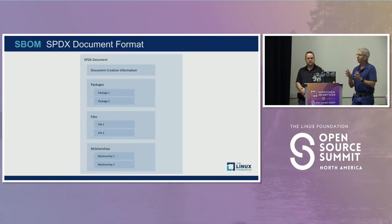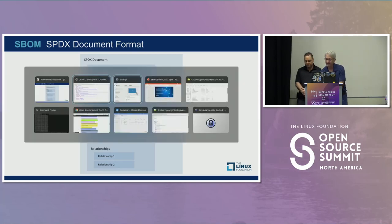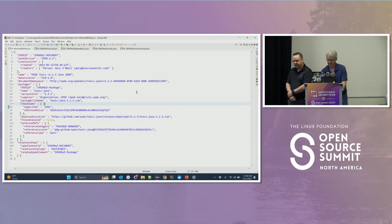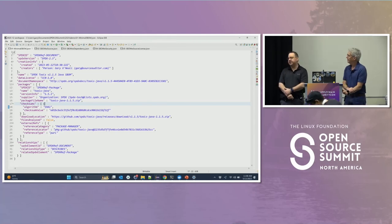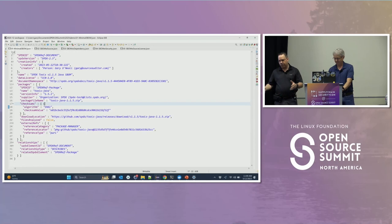I'm going to give a little demo of exactly what's in an SBOM — just a minimum SBOM. At the very top is the creation information about the document, then the package information, file information, and the relationships. We will be posting these slides on the conference website after the talk. You may have noticed these tables appearing again and again across sessions here at Open Source Summit — that's because they come from the NTIA, the government specification.